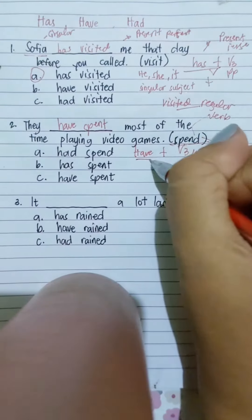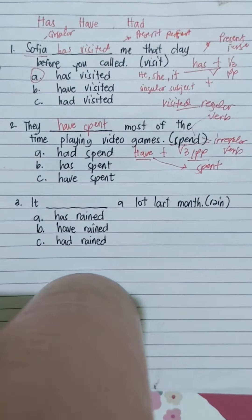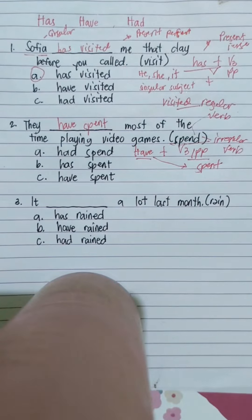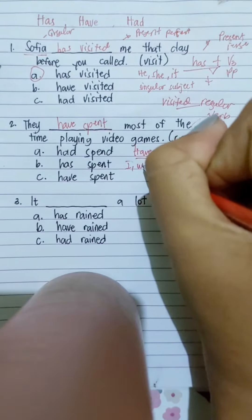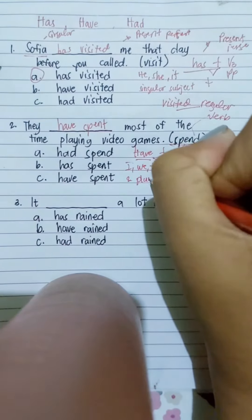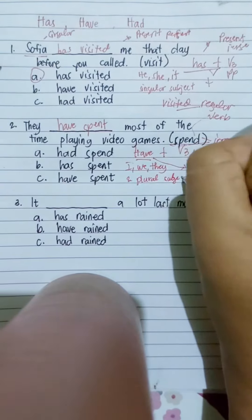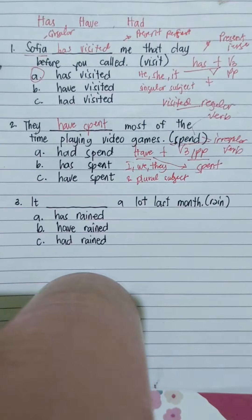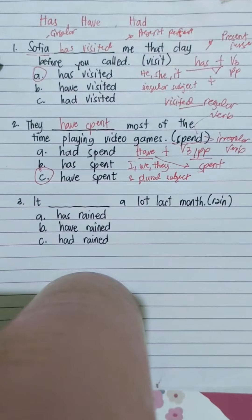So have plus the past participle of the verb, which is spent. We use have if the subject is I, we, they, and plural subject. So the correct answer is have spent.